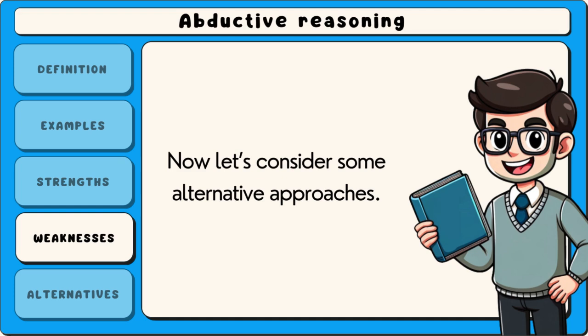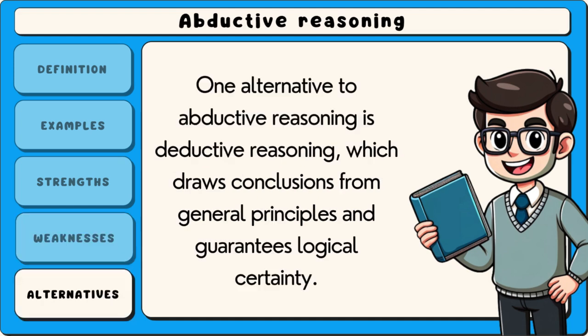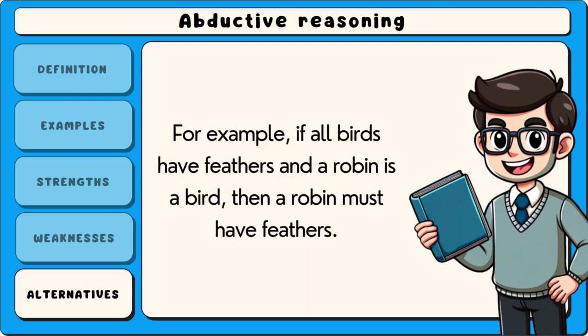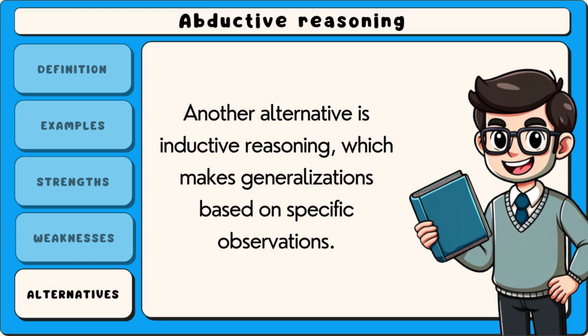Now let's consider some alternative approaches. One alternative to abductive reasoning is deductive reasoning, which draws conclusions from general principles and guarantees logical certainty. For example, if all birds have feathers and a robin is a bird, then a robin must have feathers. Another alternative is inductive reasoning, which makes generalisations based on specific observations.